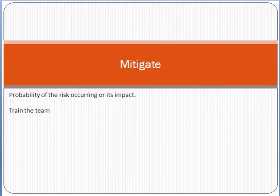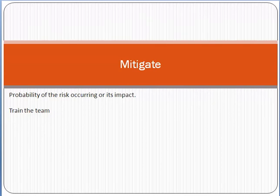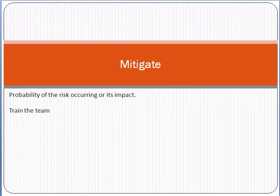Mitigate means you try to decrease the probability of the risk occurring or reduce its impact. For example, if you started a new e-commerce project and you know your team is not capable enough on a particular technology, you arrange training for the team on that technology so that after training they will be capable enough to handle it. Mitigation means decreasing the likelihood or chances of occurrence of the risk.